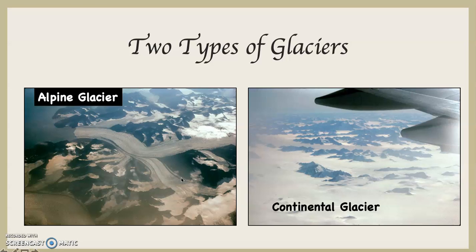A continental glacier is this: these are massive glaciers that cover extensive land areas and are not controlled by the configuration of the underlying land. In other words, they are so massive they go over the tops of the mountains, and because of that, rather than flowing downslope, they move outwards. The two remaining massive continental glaciers on the planet are in Antarctica and Greenland.